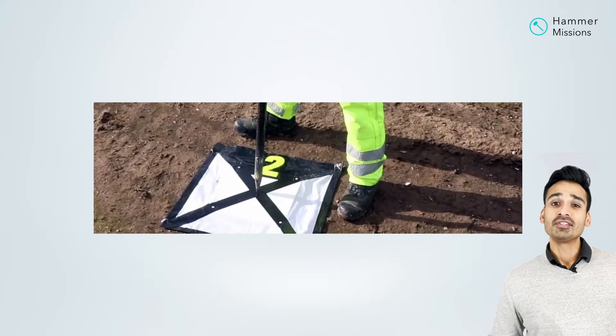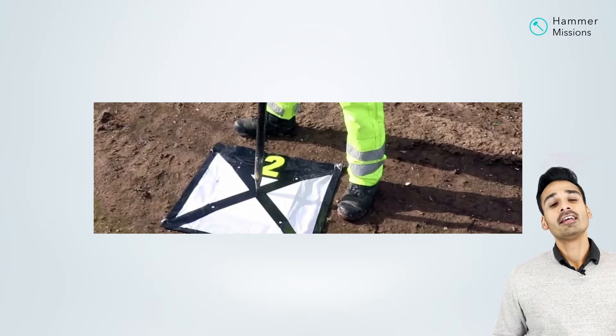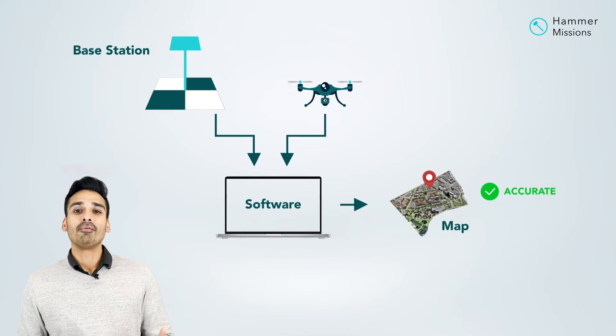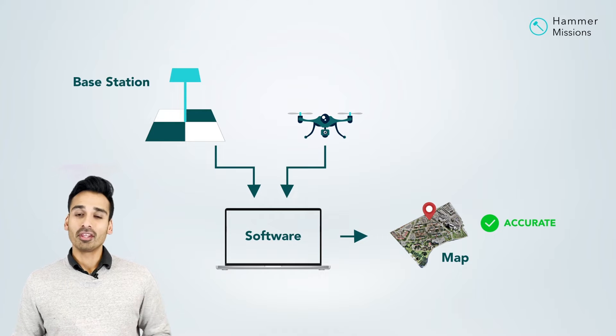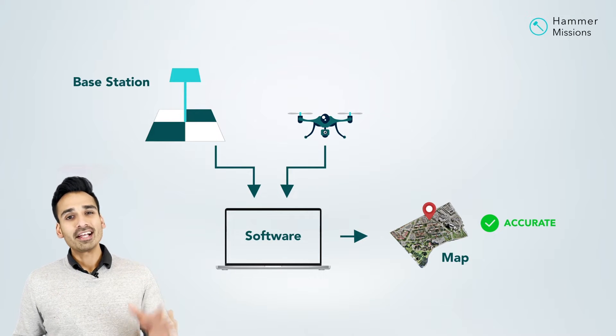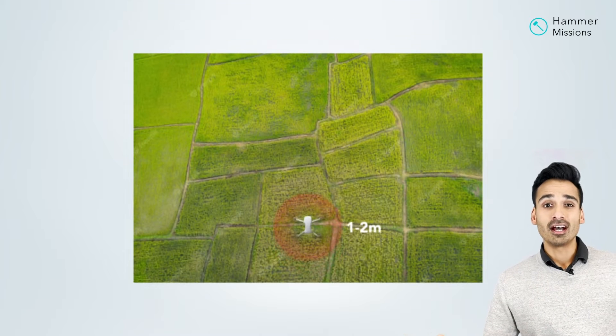Once you put down these markers on the ground and record their GPS positions, you fly your drone over the site and correlate the known positions from the base station or GPS receiver with the photos taken by the drone. You essentially put all of that information together into one map or model so that the drone images can be corrected and placed in the right positions. Now, why do we need GCPs? Because GPS on a drone — typically without RTK — can have error anywhere between one meter and two meters.